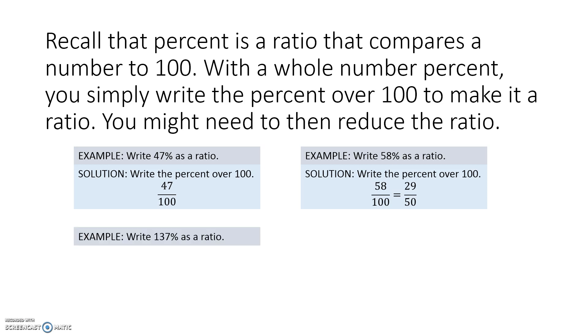Sometimes the percent is bigger than 100, so we're going to write 137% as a ratio. We still just put the 137 over 100. This one does not reduce, so we get 137 to 100.